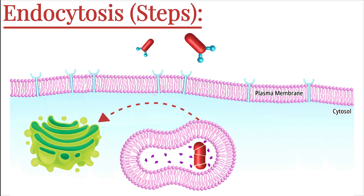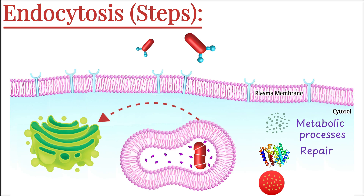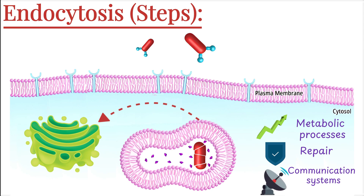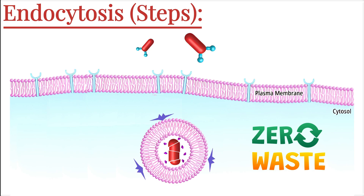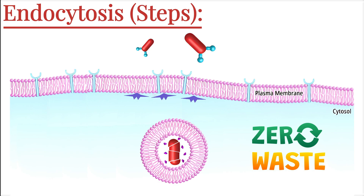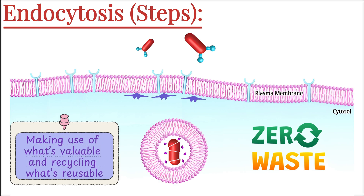After sorting, the cell puts the incoming material to real use. If it's something beneficial like nutrients, enzymes, or signaling molecules, the cell integrates it into its metabolic processes, repairs, or communication systems. This supports the cell's growth, defense, or coordination with other cells. Additionally, the cell doesn't waste resources — receptor proteins used during the initial binding process are often sent back to the cell membrane to be reused for future endocytosis, making the process energy efficient. In this final step, the focus is on making use of what's valuable and recycling what's reusable — a perfect balance of resourcefulness and precision inside the cell.